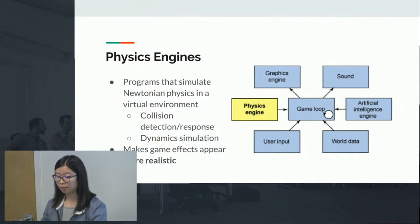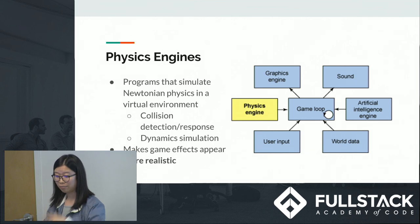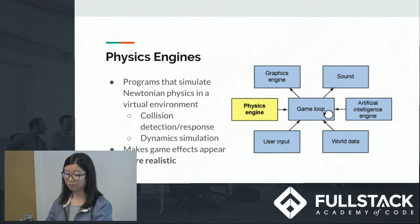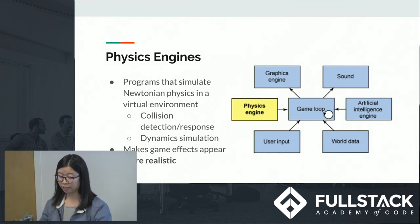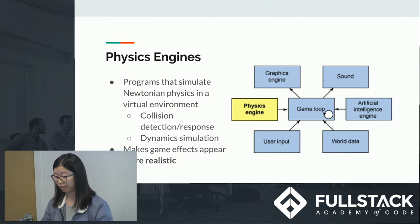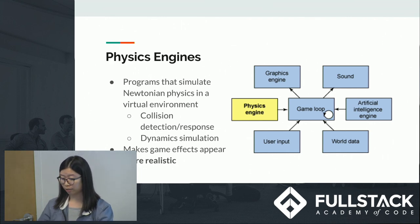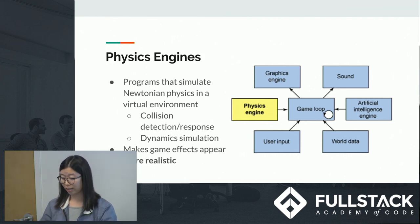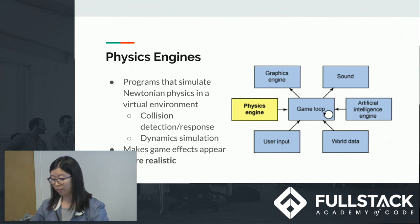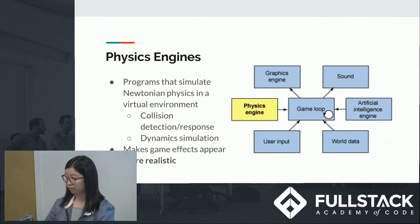Physics engines are programs that simulate Newtonian physics in a mathematically and computationally simulated virtual environment. They typically have at least two core components: a collision detection and collision response system, and the dynamic simulation component responsible for solving the forces affecting the simulated objects. Its primary purpose in games is to make effects appear more realistic to the observer. The figure on the left shows a physics engine in the context of a game app.